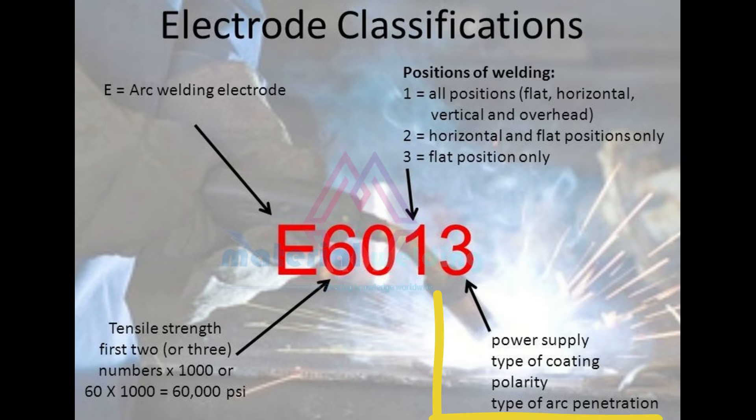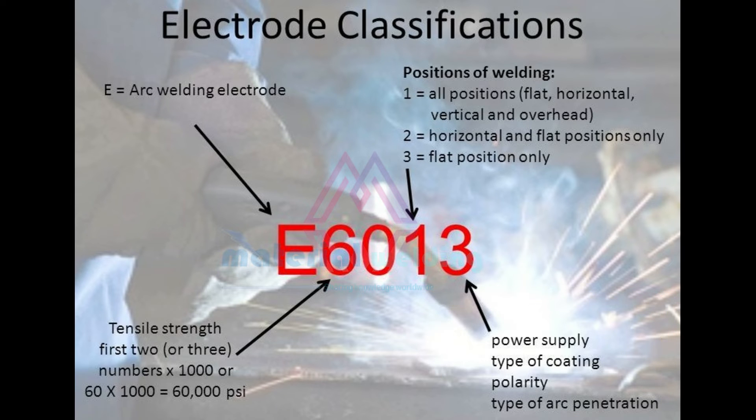The last digit 3 indicates it is high titania potassium and can be welded with DCEP, DCN, and AC polarity.